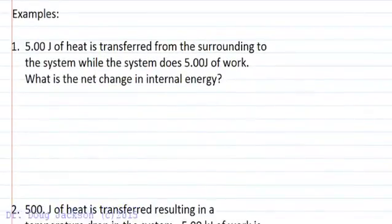And so the best thing to do is examples for this. So if we read a problem: 5 joules of heat is transferred from the surroundings to the system, while the system does 5 joules of work. What is the net change in internal energy? So we have to decide for our net change whether q plus w is positive or negative for each individual quantity.